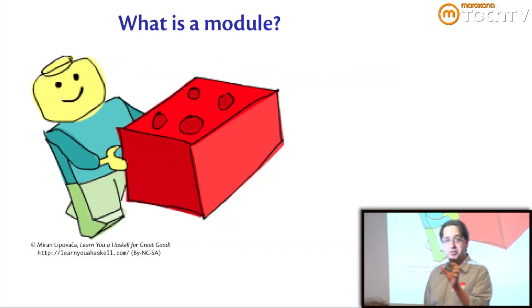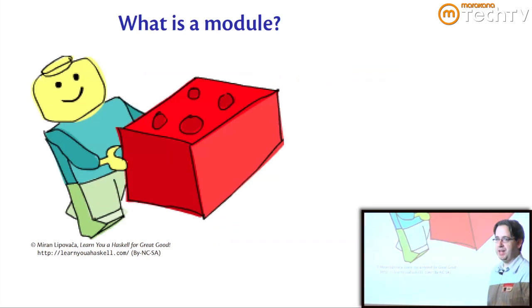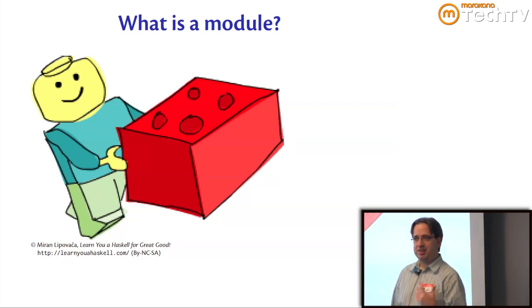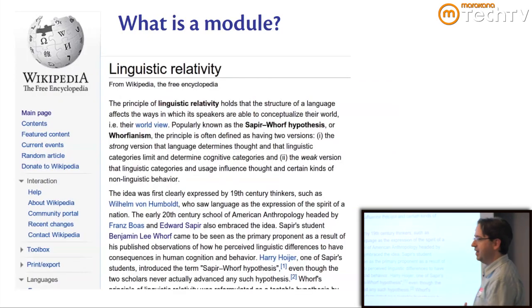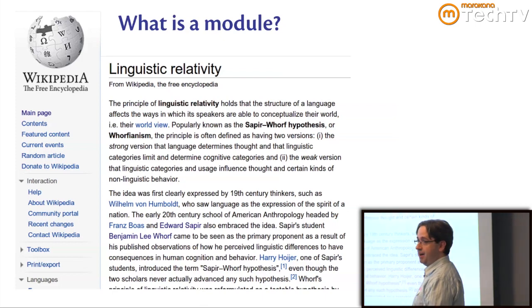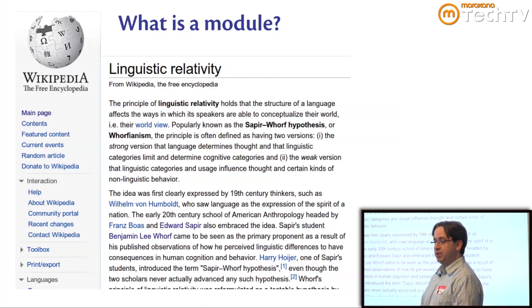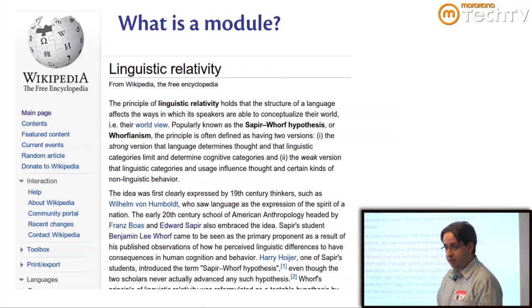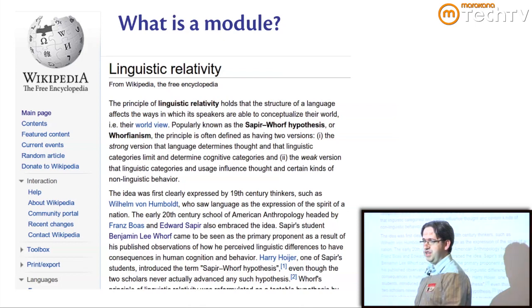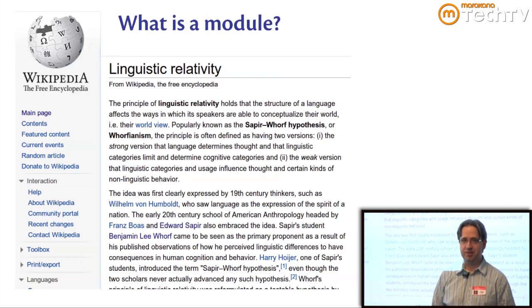There's kind of a Sapir-Whorf effect here, linguistic relativity, because what you think a module is is certainly influenced by the languages that you know, just like what you think about types is influenced by the languages you've had experience with. If you tell a C programmer that you're doing fancy things with types, they'll think you're kind of crazy.